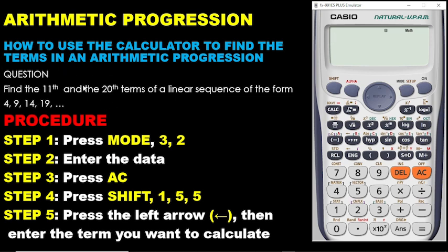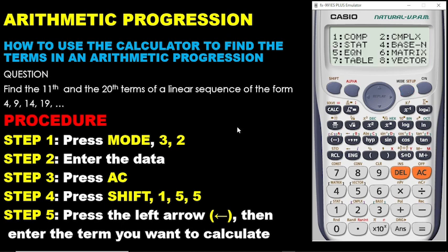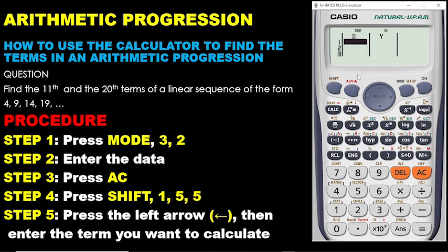We want to use the calculator to work through this. The steps are as follows. First, press the mode button. Then choose option 3 — that is statistics. So we press 3. And then you choose option 2, which is for arithmetic progression. Since this is an AP, we are choosing option 2. You will see a new interface.